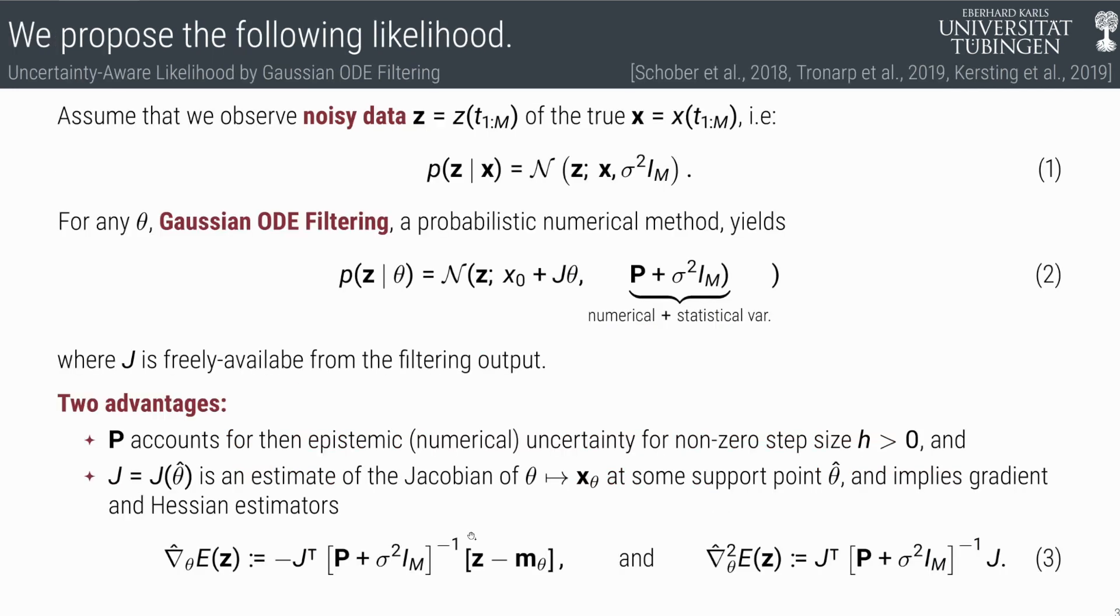What happens actually with the probabilistic numeric step? First recall here in equation one that we have noisy data of a derivative. And that's our statistical likelihood, if you wish.